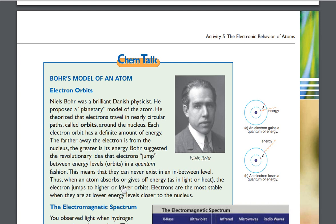This means that they can never exist in an in-between level. Thus, when an atom absorbs or gives off energy, as in light or heat, the electron jumps to higher or lower orbits. Electrons are the most stable when they are at lower energy levels, closer to the nucleus.